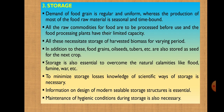The next unit operation is Storage. The demand for food grain is regular and uniform, whereas the production of most raw materials is seasonal and time-bound. All raw commodities for food are to be processed before use, and food processing plants have limited capacity. All these necessities require storage of harvested biomass for varying periods. In addition, food grains, oil seeds, tubers, and other crops are also stored as seeds for the next crop. Storage is also essential to overcome natural calamities like flood, famine, and war. To minimize storage losses, it is necessary to have knowledge of scientific ways of storage.